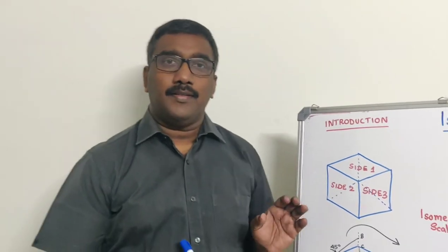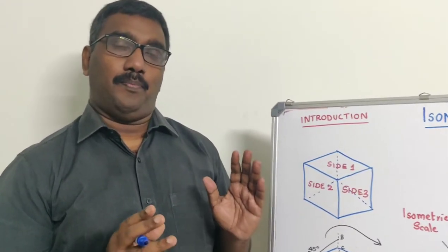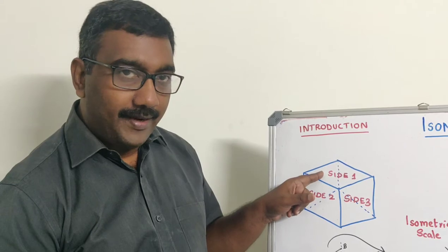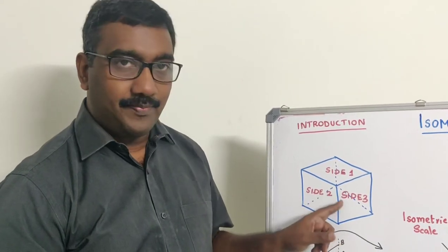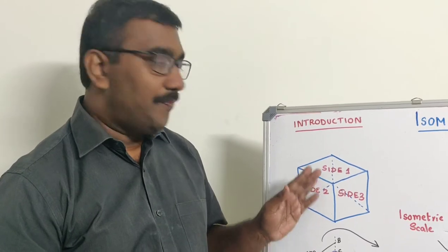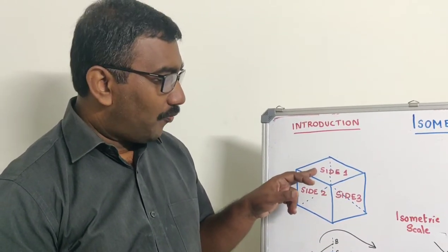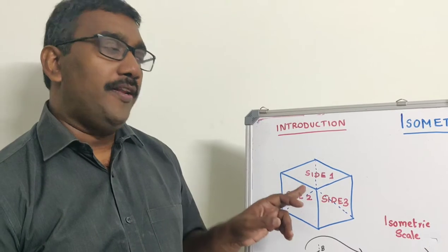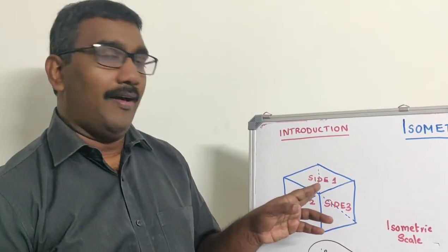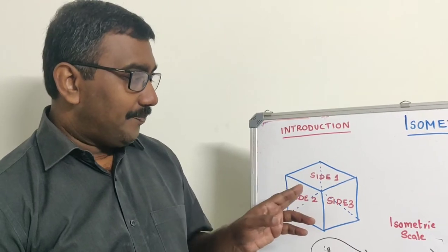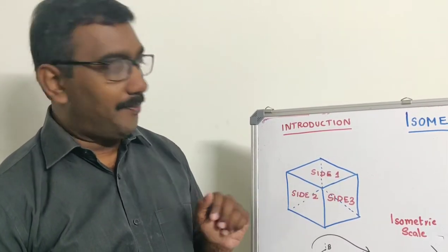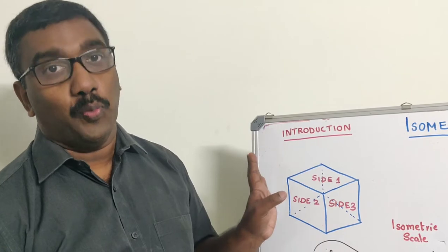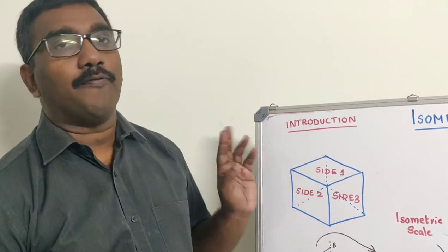I have drawn a similar figure of a cube. You can see the top side and two lateral sides. Since it is a cube, all the sides are equal. I have marked this as side 1, side 2, and side 3. This point represents a perpendicular line, which is actually the solid diagonal — perpendicular to the vertical plane. So you are getting a three-dimensional view of a cube where you can see three faces. That is the advantage.